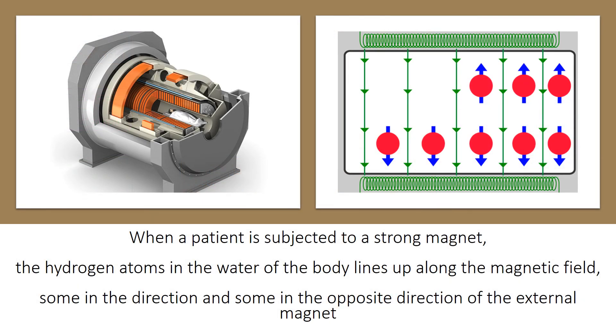When a patient is subjected to a strong magnet, the hydrogen atoms in the water of the body line up along the magnetic field, some in the direction and some in the opposite direction of the external magnet.